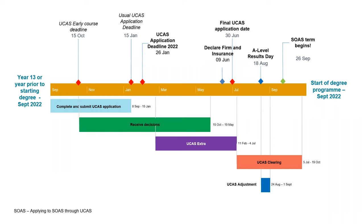Other dates to consider: UCAS Extra runs between February and July. If for any reason you decide your first five choices are no longer valid, you can make a UCAS Extra application and have one more choice. And then if at results time you've either achieved better or not as well as expected, there is also UCAS Clearing, which gives you another option to apply to UK universities that year.